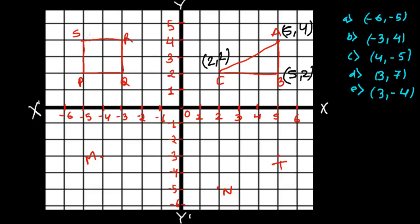Now let's find the location of the square. For point P, along the x-axis it is negative five, and along the y-axis upward it is one, two — so P is minus five, two. For point Q, the x-coordinate is negative three and y is two, so Q is minus three, two.